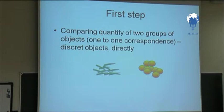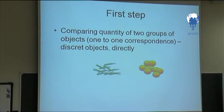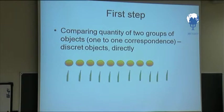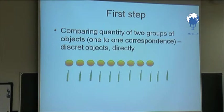You can see the first step: comparing quantity of two groups of objects by one-to-one correspondence with discrete objects directly. In this way, a child can say absolutely exactly where there are more things.